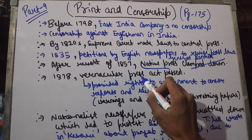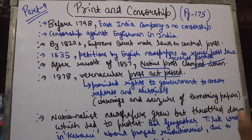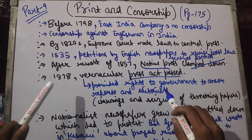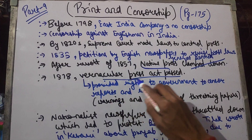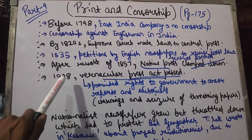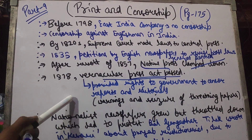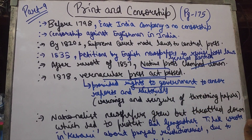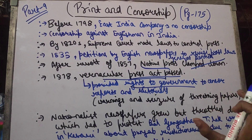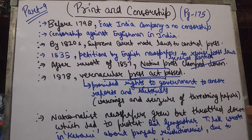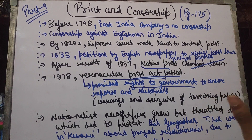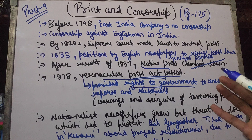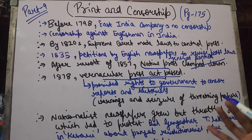In 1878, the Vernacular Press Act was passed. You should remember this — which press act, and when it passed — in 1878. What happened was the government got all rights over the press. The press could be censored before printing, and if someone printed something wrong, they could be prosecuted. The press could also be closed.